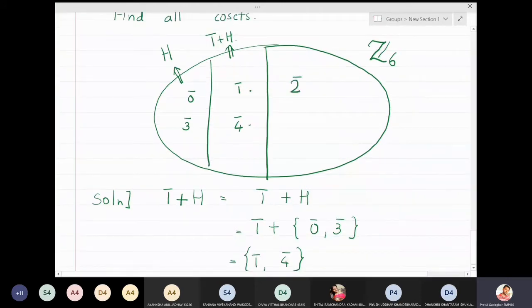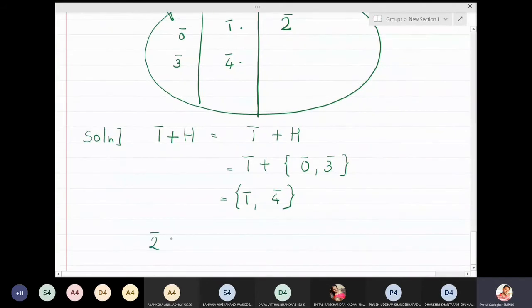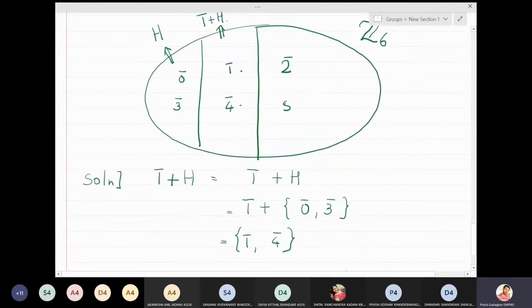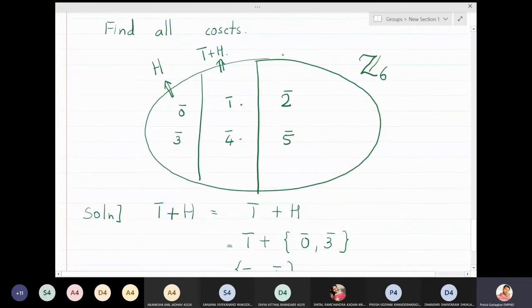So let me pick 2̄. What is 2̄ + H? 2̄ + H means 2̄ is going to be added to all elements of H. So it is 2̄ + 0̄ = 2̄, and 2̄ + 3̄ = 5̄. So this set is now {2̄, 5̄}, and the name of that set is 2̄ + H.